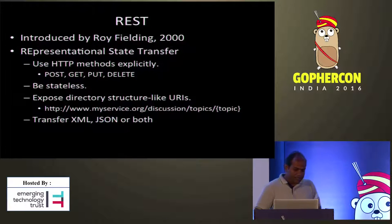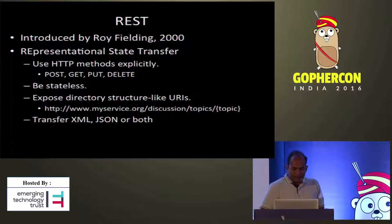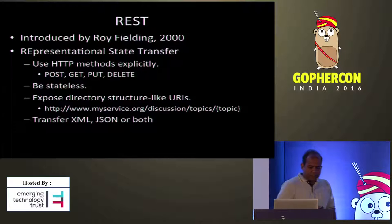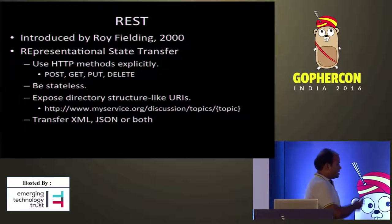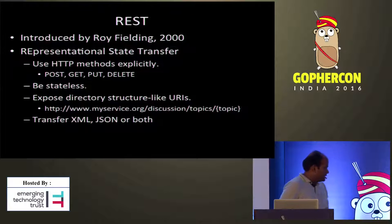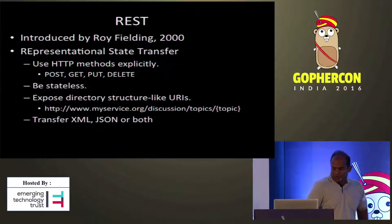The second principle is to be stateless. The third is to expose a directory structure-like URI — every REST URL should look like a directory structure. And fourth, it can transfer XML, JSON, or both. Those are the four principles.